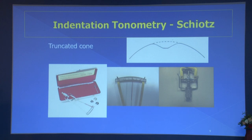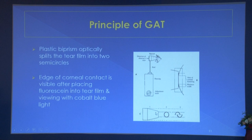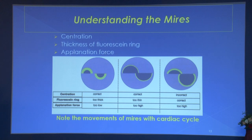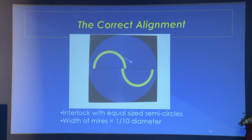Indentation tonometry is problematic when ocular rigidity is high or very low. The Goldman applanation tonometer has a plastic biprism which optically splits the tear film into two semicircles. The edge of corneal contact is visible after placing fluorescein into the tear film and viewing with cobalt blue light. The Mayer's understanding is based on centration, thickness of the fluorescein ring, and applanation force. The two semicircles should interlock with equal size, and the width of the Mayer ring should be one-tenth of the total diameter.